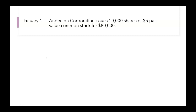Let's start with the transaction on January 1st. Anderson Corporation issues 10,000 shares of $5 par value common stock for $80,000. We need to be thinking as Anderson Corporation — what are we getting? We are getting cash, so our cash has to be debited; it has to increase.